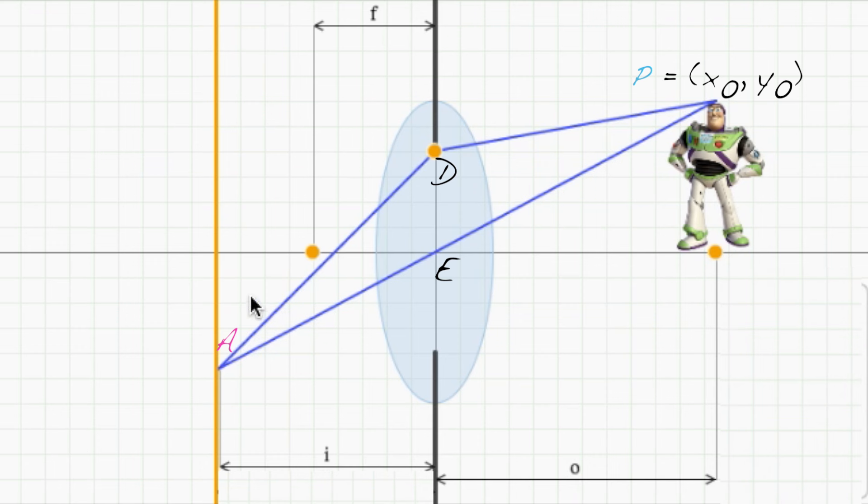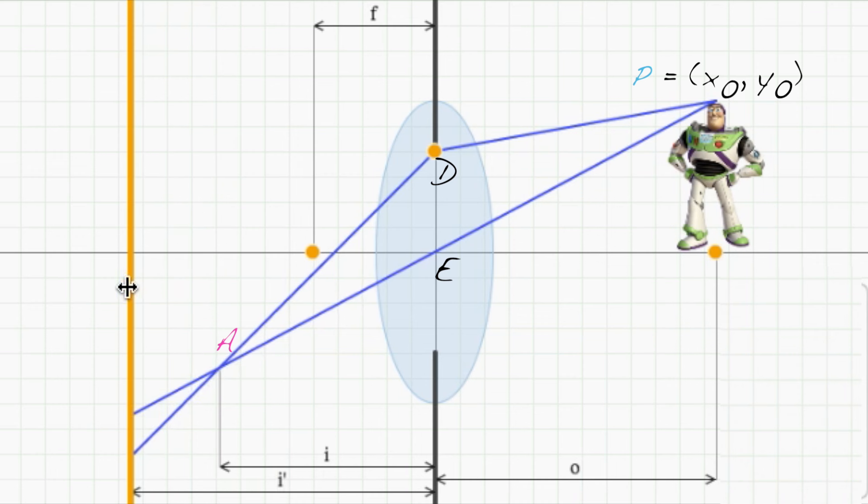But if the image plane is at a larger distance, I prime, say over here, then P's image gets blurred out into the region denoted BC in the diagram. This distance, BC, defines the size of the circle of confusion. That is, BC is the radius of the blur.